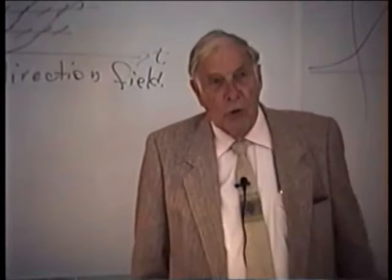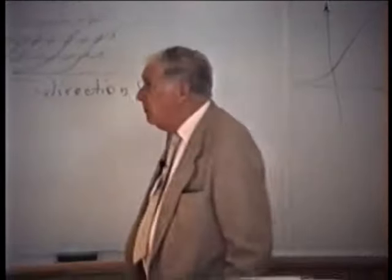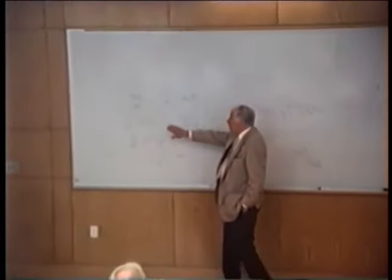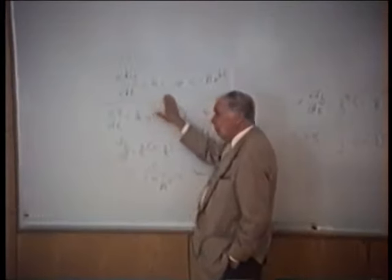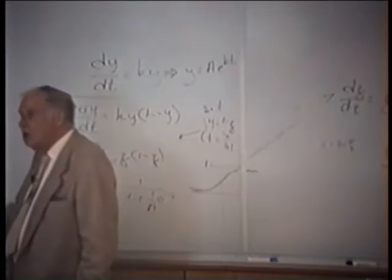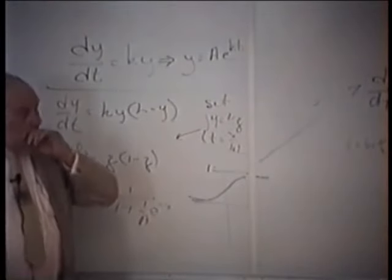Now I want to talk about growth. The simplest model of growth is that the rate of change is proportional to how much you've got — for example, bacteria growing, or human beings unrestrained. They have a given rate of reproducing and they're going to grow exponentially, unless other factors come in. This gives rise to the solution you all know: the exponential. That goes out to infinity, and you don't believe infinity. The current belief is the whole universe is finite, so you haven't got an infinite number of molecules. So that can't be right.